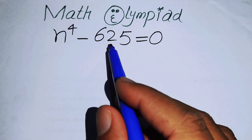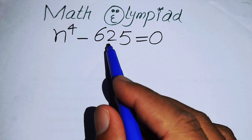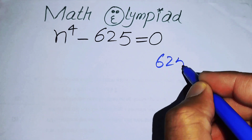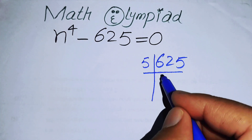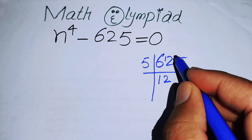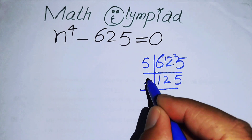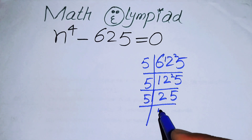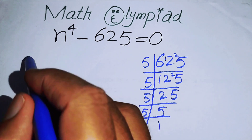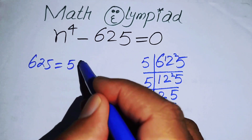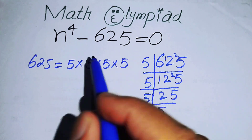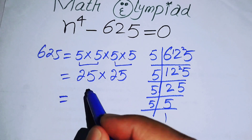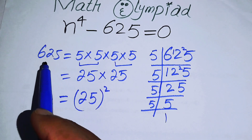The first thing we are going to do is find the factors of 625. We divide 625 by 5 repeatedly through long division, giving us the prime factors of 625 as 5 times 5 times 5 times 5. When we multiply these in pairs we get 25 times 25.